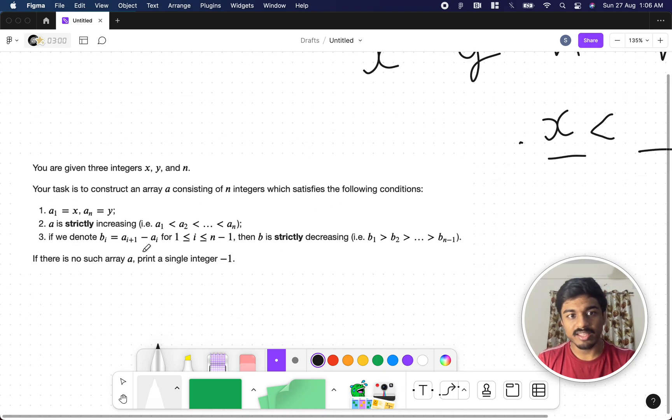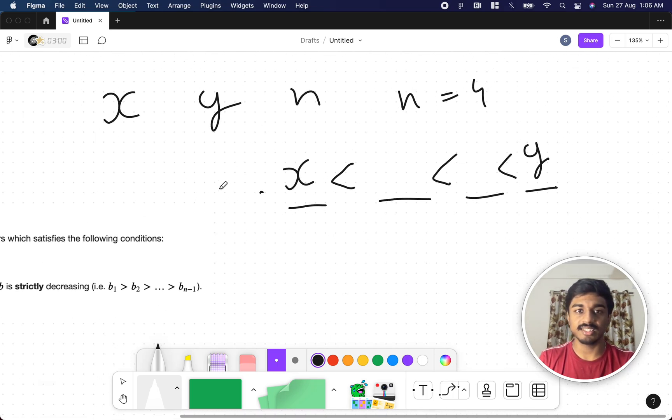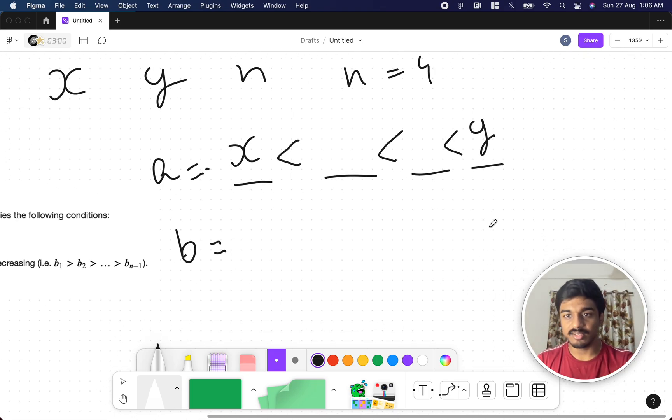Now if we denote b_i as a_(i+1) minus a_i, then b is strictly decreasing. That is, if this is the a array and they create a b array from the a array, they are telling that the difference between any two consecutive elements should be keeping on decreasing. That is, if this is x1 and this is x2, they are telling that x1 minus x is greater than x2 minus x1 is greater than y minus x2.